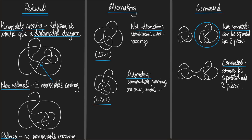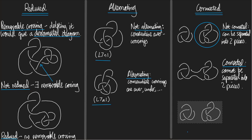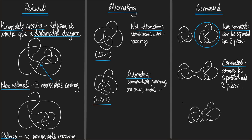Similarly, if I start with a diagram that's not connected, I can make it connected. Let's take a diagram that's not connected — there it is. I can make it connected by doing a Reidemeister move: we make space and then just move a little closer. So if my diagram is not connected, I can make it connected.